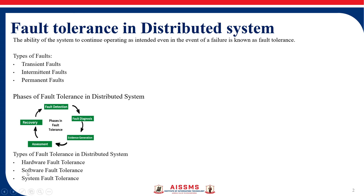First is hardware fault tolerance. It involves keeping a backup plan for hardware devices like CPU, memory, hard disk, or any other peripheral devices. This type of fault tolerance does not examine faults and runtime errors but can only provide hardware backup.